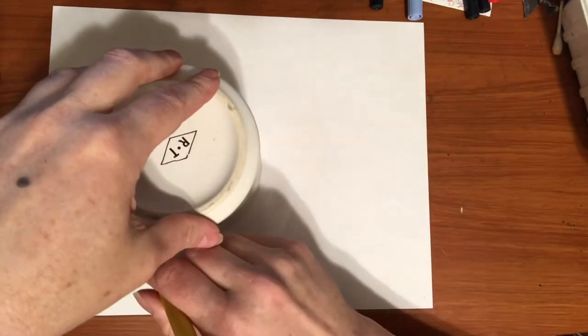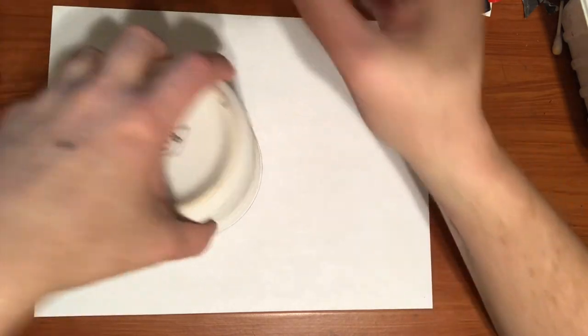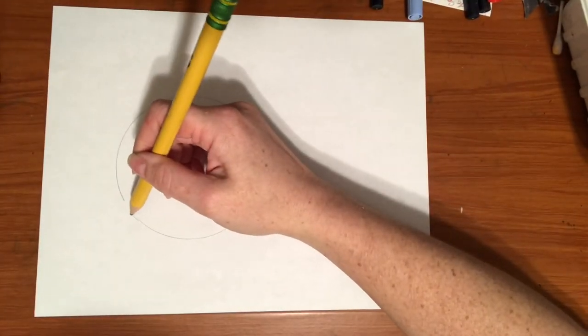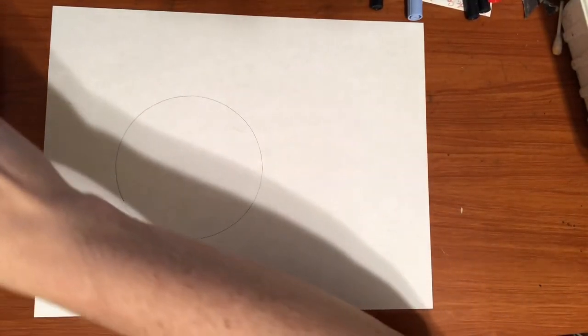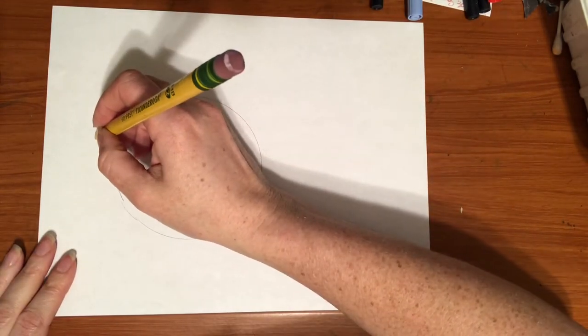Alright friends, we're gonna start with a pencil. You can draw your circle freehand, or if you want to get a small bowl or plate or anything round, you can use that to trace to help you get that circle shape. Once you have that circle shape, we're also going to make a bigger circle around our first circle to show the outside of the bowl.